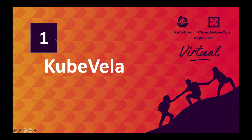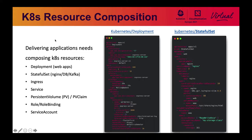First, let's talk about KubeVela. Delivering applications on Kubernetes needs composing a couple of Kubernetes resources — for example, deployment, StatefulSet, ingress, services, etc. Usually, we not only need to bundle all those resources into a package, but we also need a composition model to parameterize and connect those resources together.